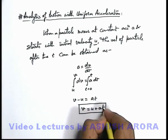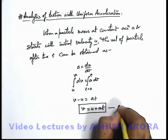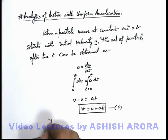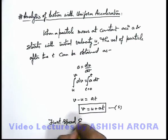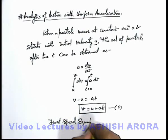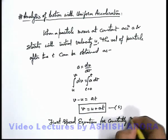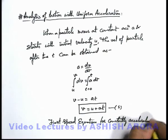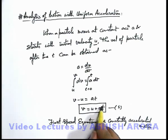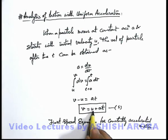You must be very careful about this equation. This is equation number 1, which we call the first speed equation for constantly accelerated motion.